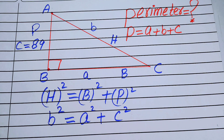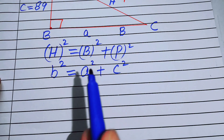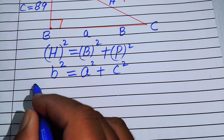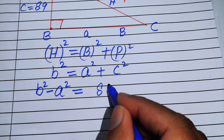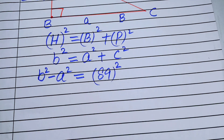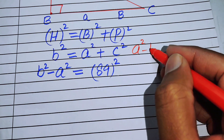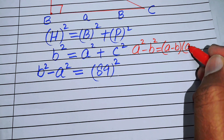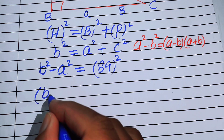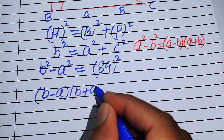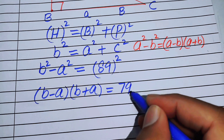We know c = 89, so substituting: b² = a² + 89². Rearranging gives b² − a² = 89². We apply the difference of squares formula — a² − b² = (a − b)(a + b) — to the left side, giving (b − a)(b + a) = 89², and 89² = 7921.